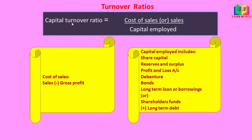Next is capital turnover ratio. The formula is cost of sales or sales divided by capital employed. Capital employed is shareholders funds plus long-term debt. Shareholders funds include share capital, reserves and surplus, and profit and loss account — both equity and preference share capital. Long-term debt includes debentures, bonds, or any long-term loans or borrowings.